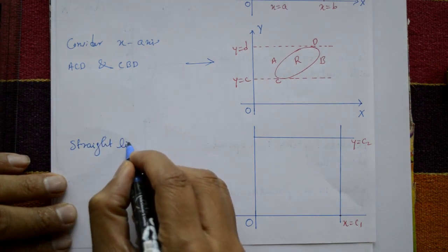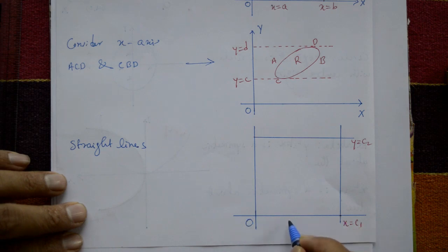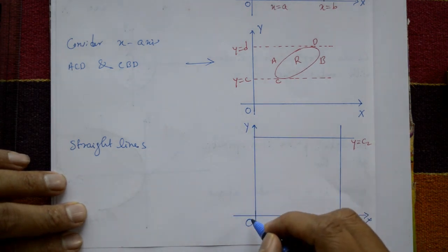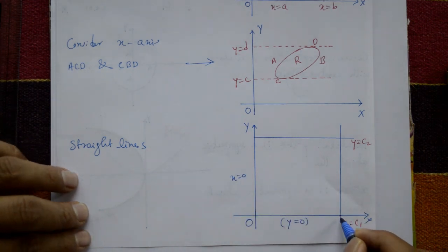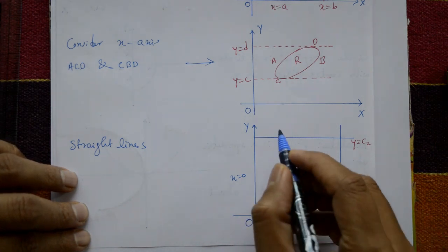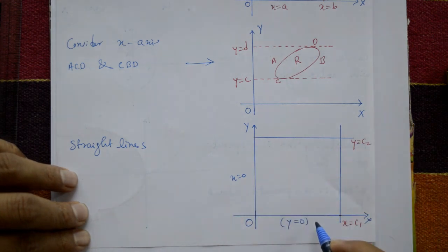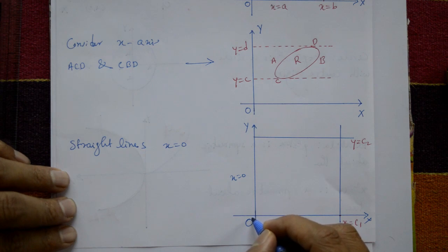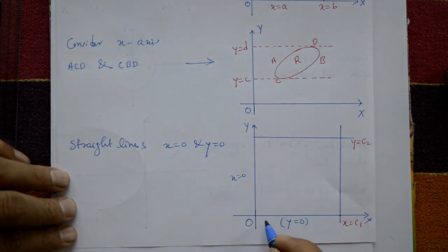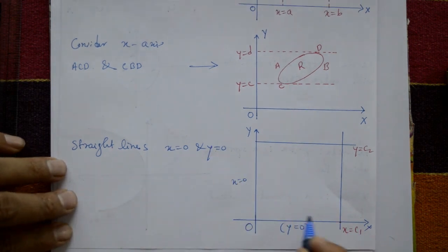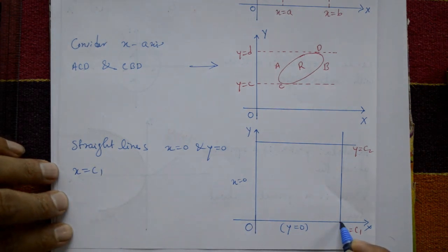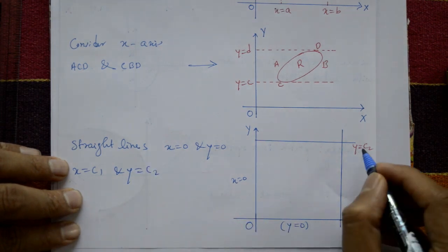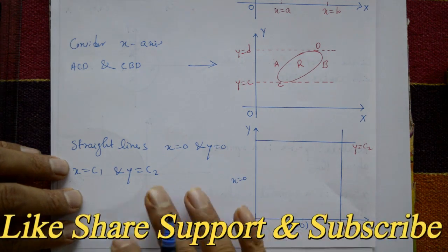Now these are straight lines. On the x-axis, the y-value is zero. On the y-axis, the x-value is zero. The line x equals c1 is parallel to the y-axis. The line y equals c2 is parallel to the x-axis. The origin is (x0, y0). So x equals 0 is the y-axis, y equals 0 is the x-axis, x equals c1 is parallel to the y-axis, and y equals c2 is parallel to the x-axis.